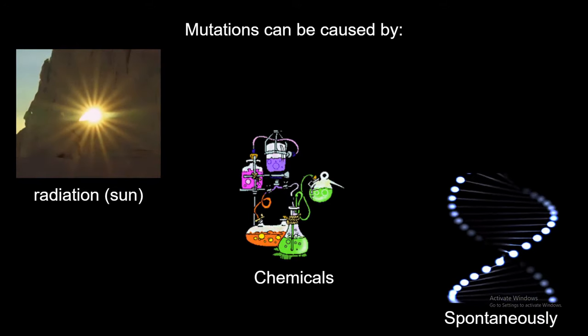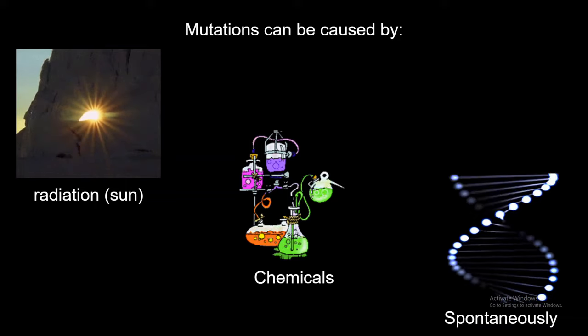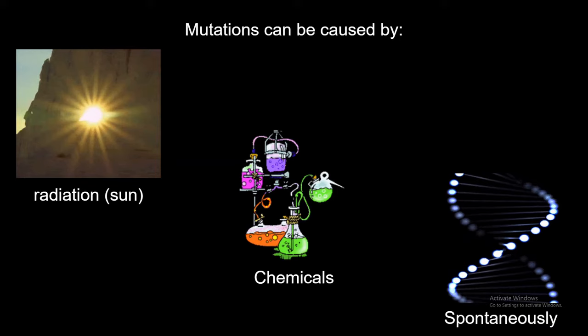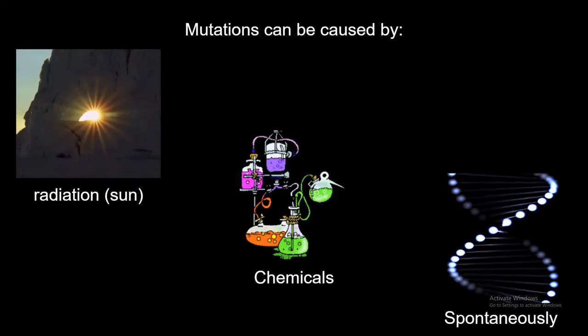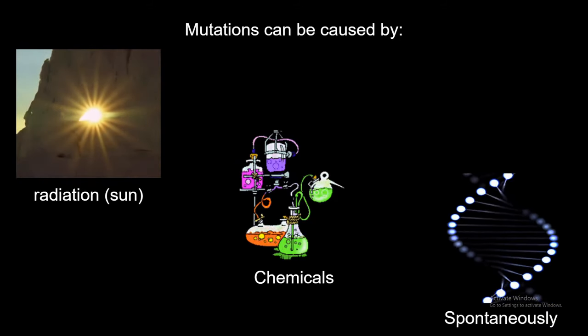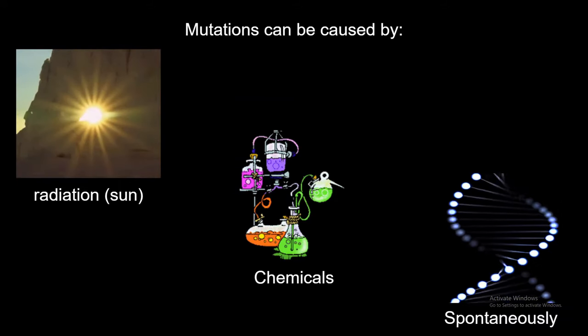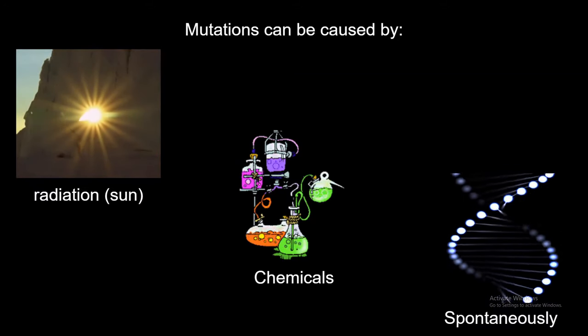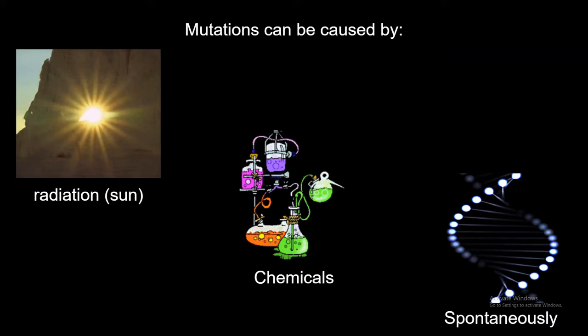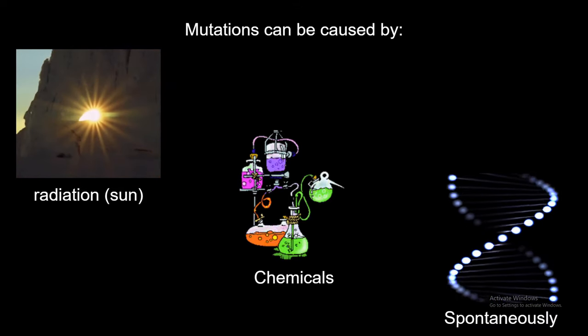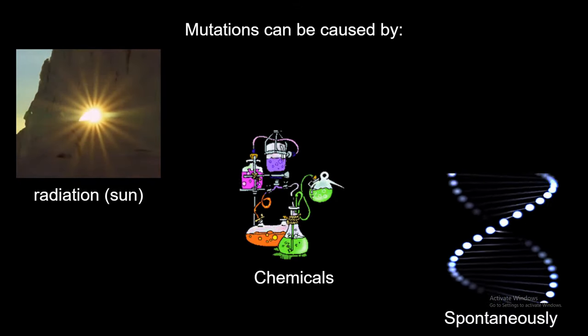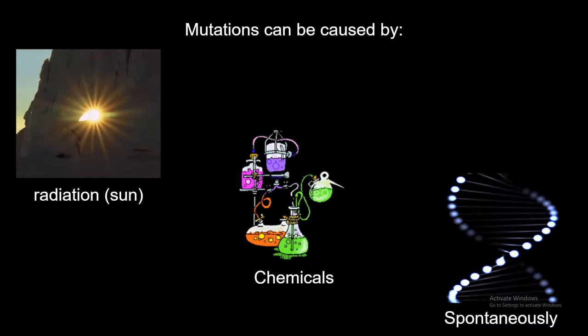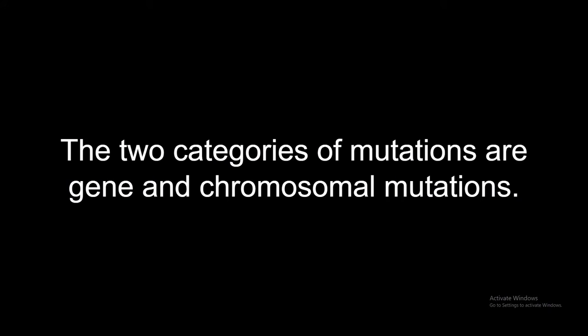So, how can you get the mutation? It can happen through things such as radiation, like the sun. A lot of people, especially with light complexion, the sun is very harmful, and it can actually cause a lot of cancer. Or, just in lab, that's why we make you guys wear a lot of protective equipment. Some chemicals can cause mutations, so we want to protect everybody. And it can also happen spontaneously. When it happens spontaneously, it can occur via mistakes in DNA replication.